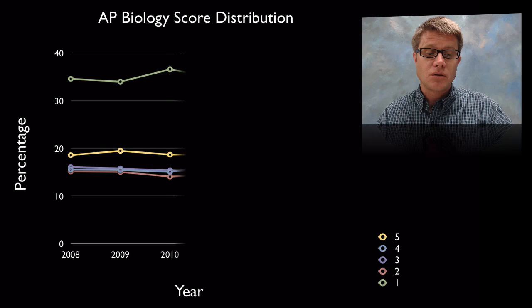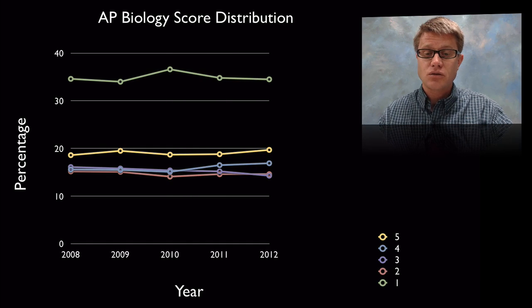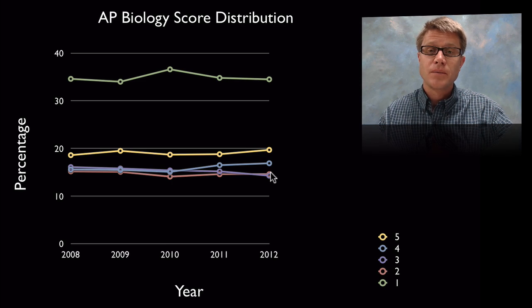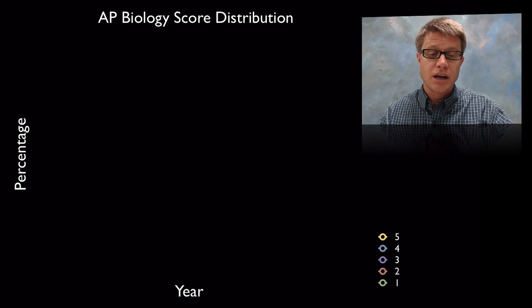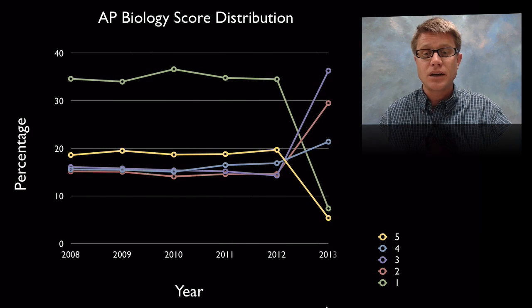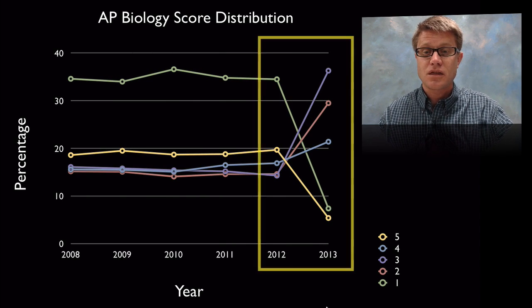So if we look at the distribution from 2008 to 2012, these are the percentages of students who got ones and then fives and fours, threes and twos. And so if I play this forward, again from 2008 now to 2013, we're going to see a big change in 2013.